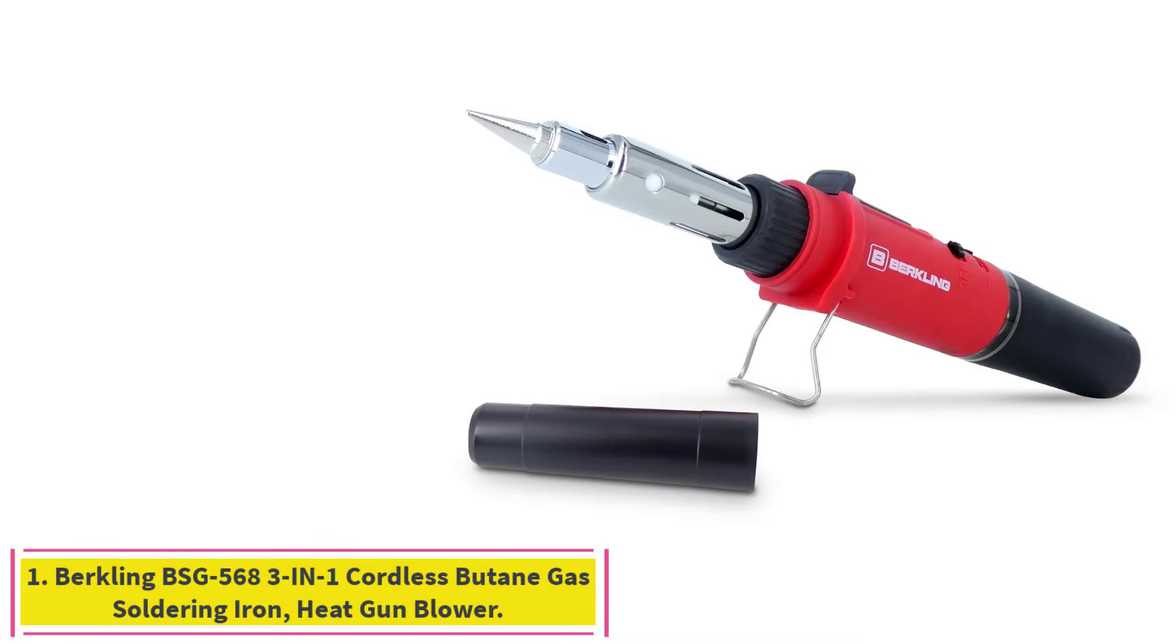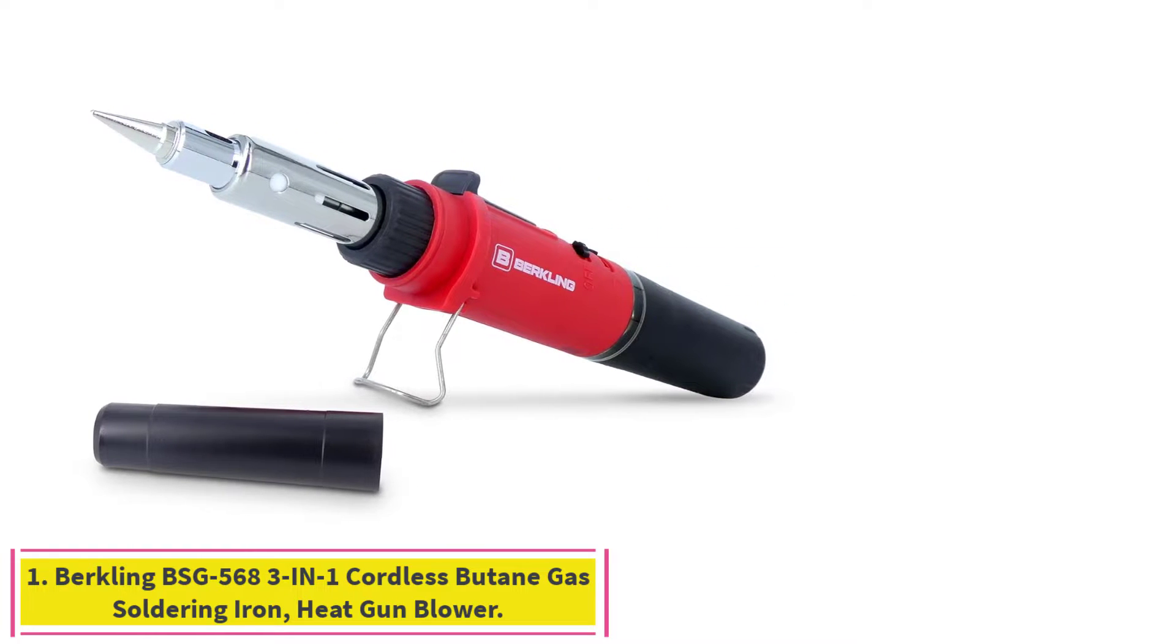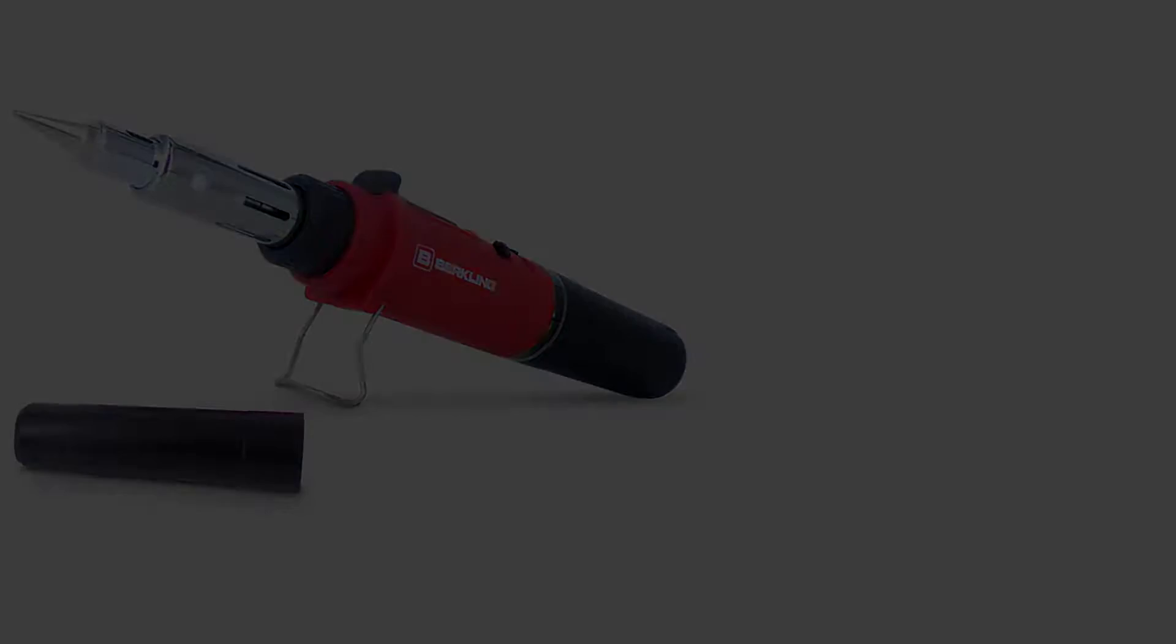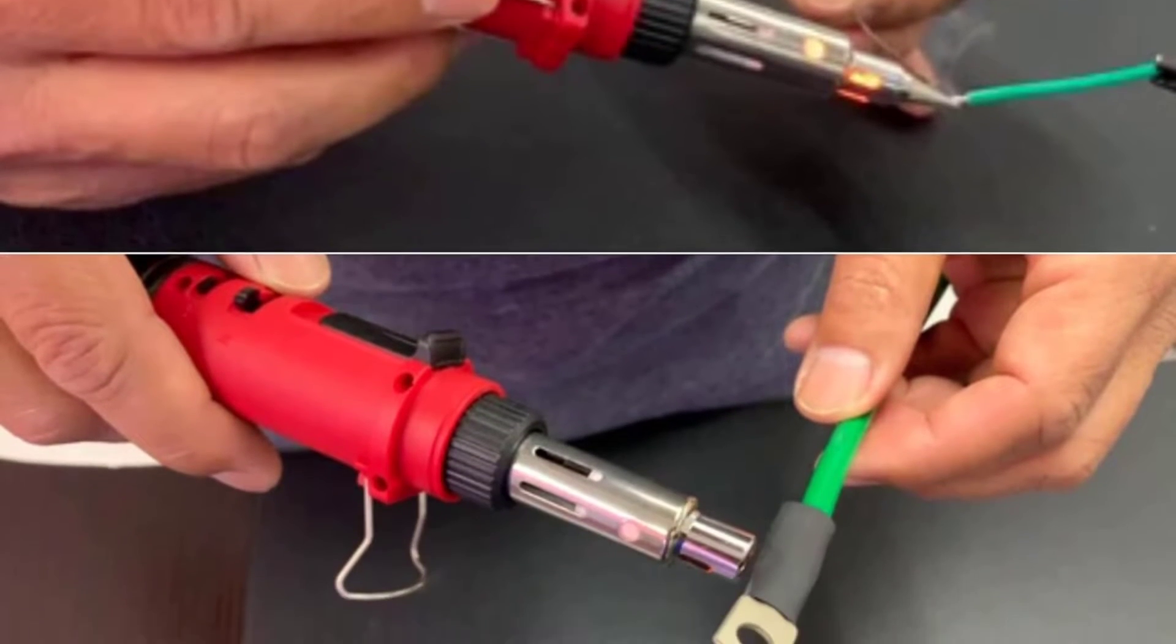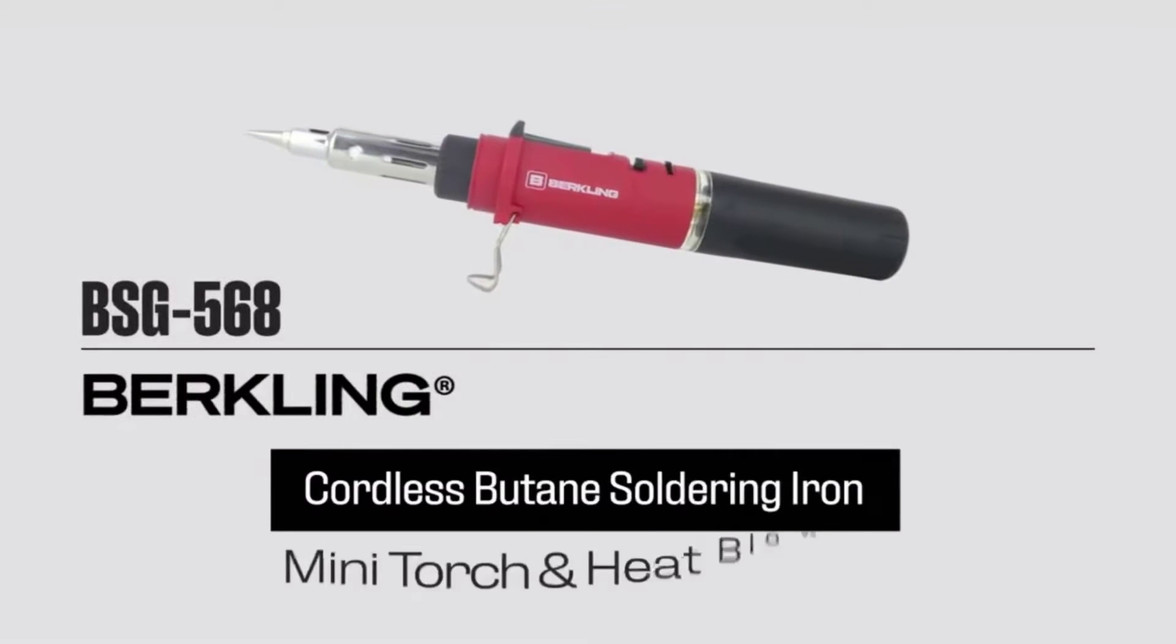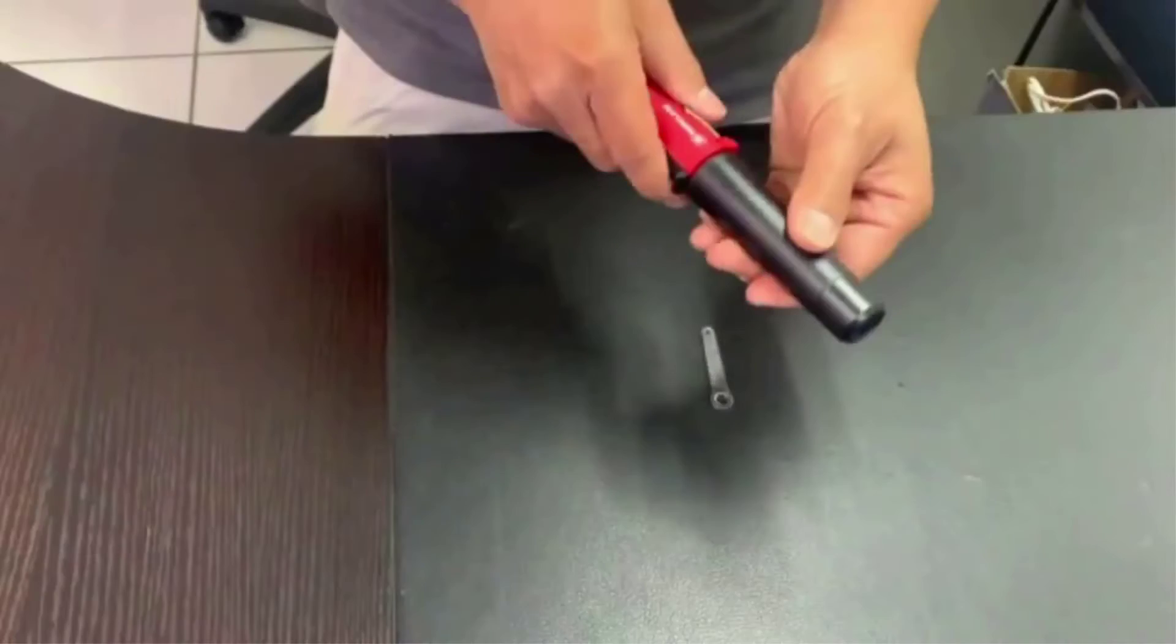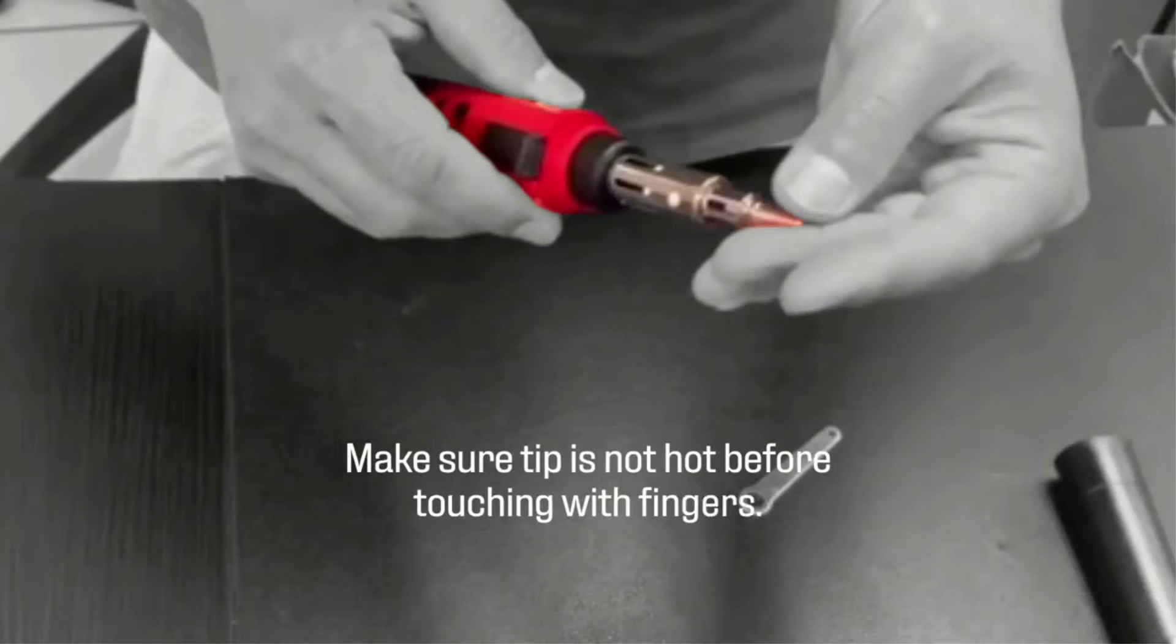Starting at number 1, Birkeling BSG 568-3IN1 Cordless Butane Gas Soldering Iron Heat Gun Blower. The 3-in-1 Birkeling BSG 568 comes with various nozzle attachments, allowing it to be used as a heat gun, a mini blowtorch, or a soldering iron. It runs on butane and lasts for an average of 90 minutes of use per refill.